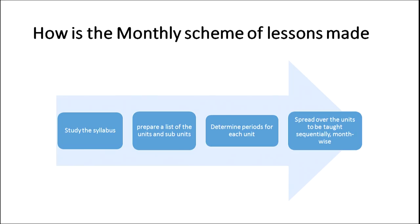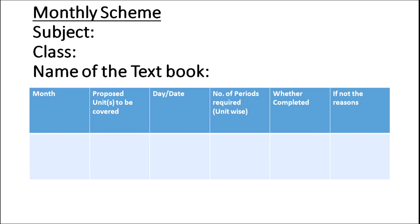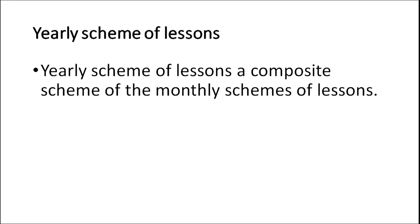At the end of the month, you make a note of whether you completed what you had planned, and if not, the reasons why you could not complete it.